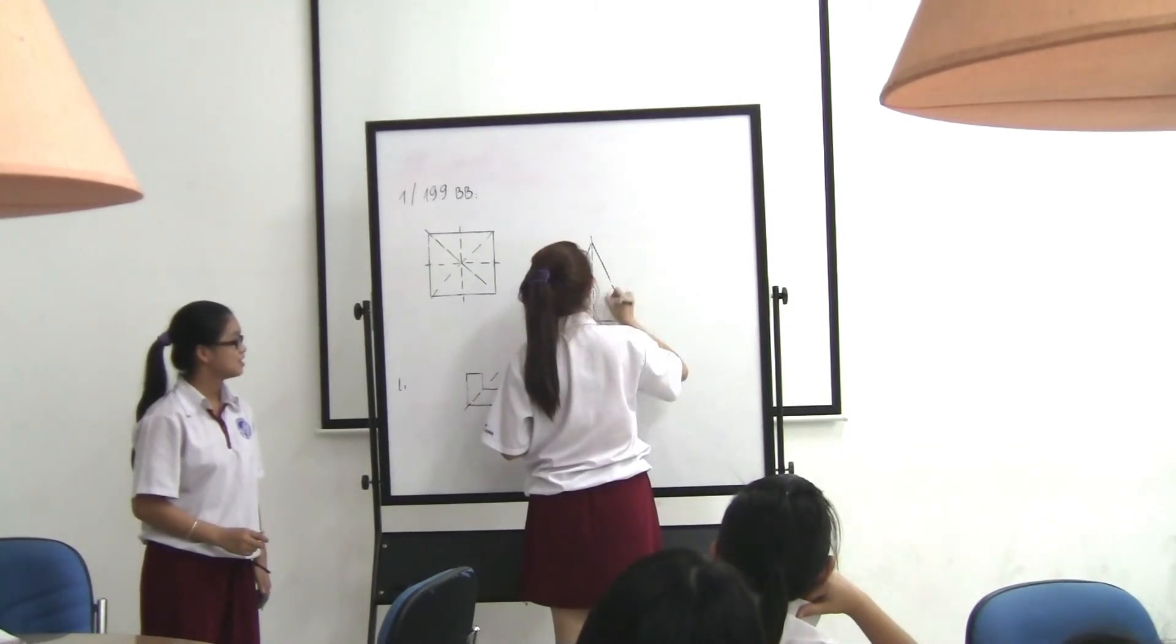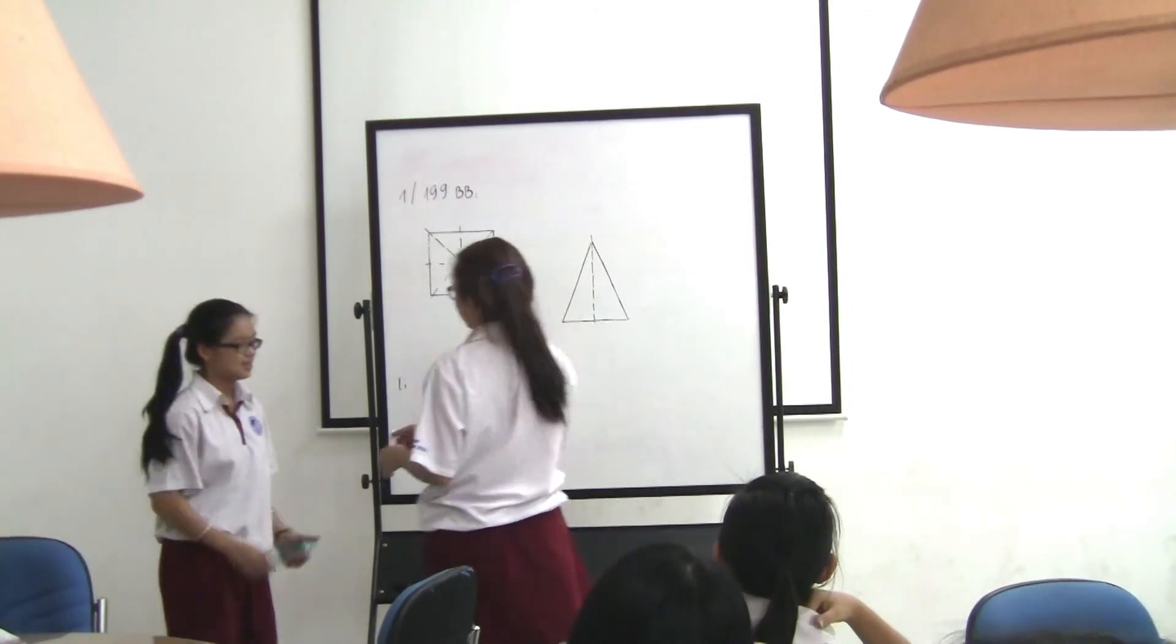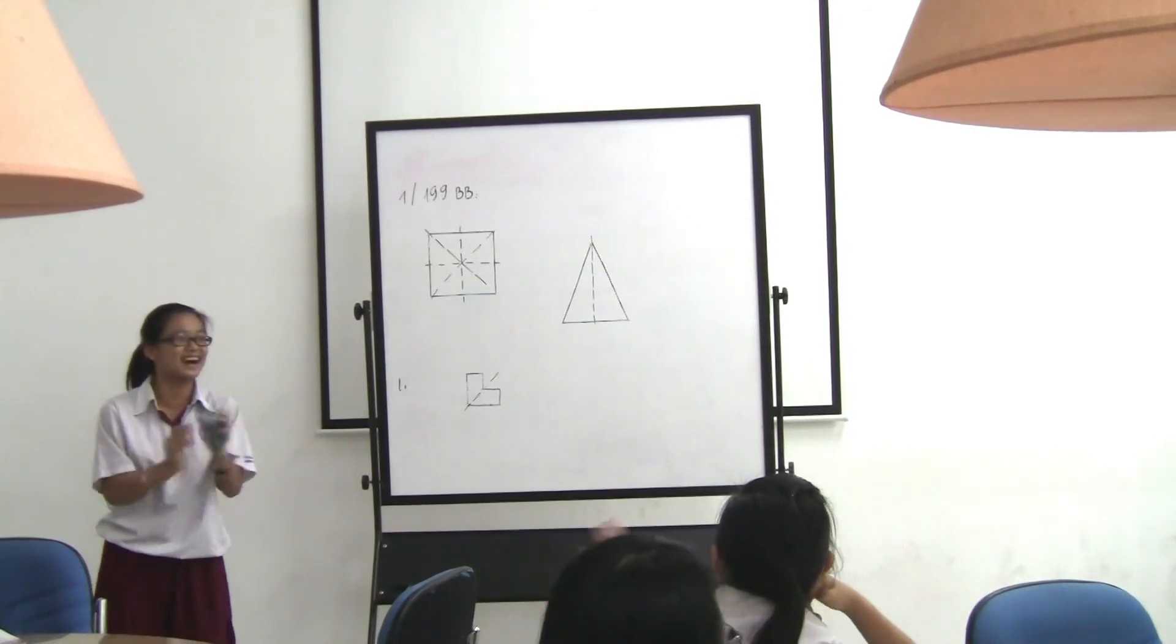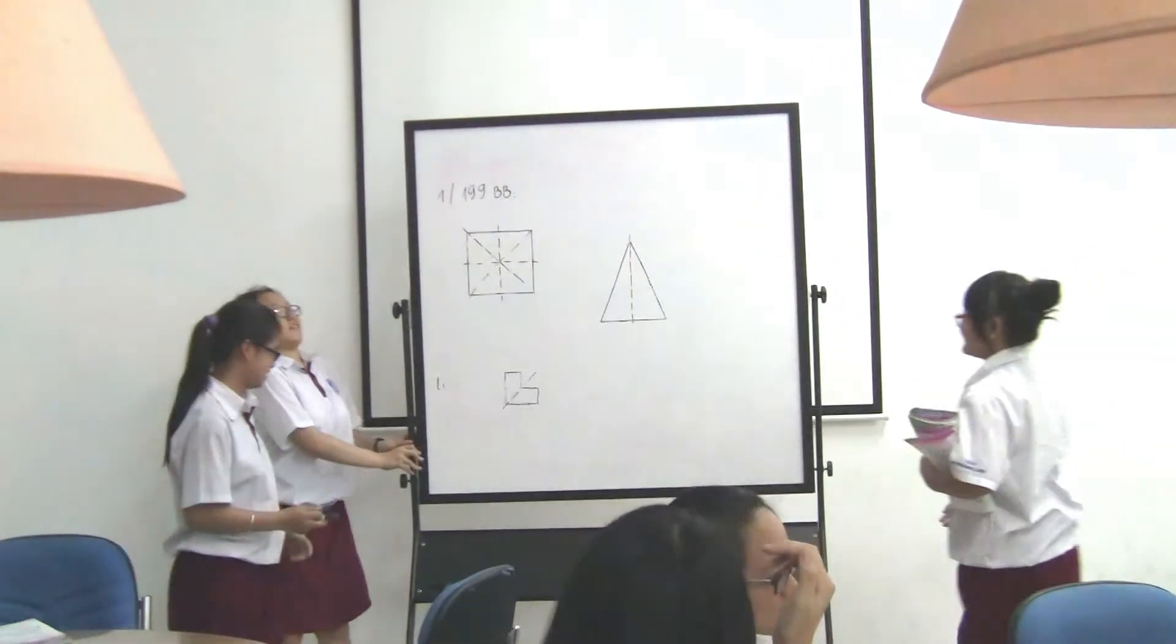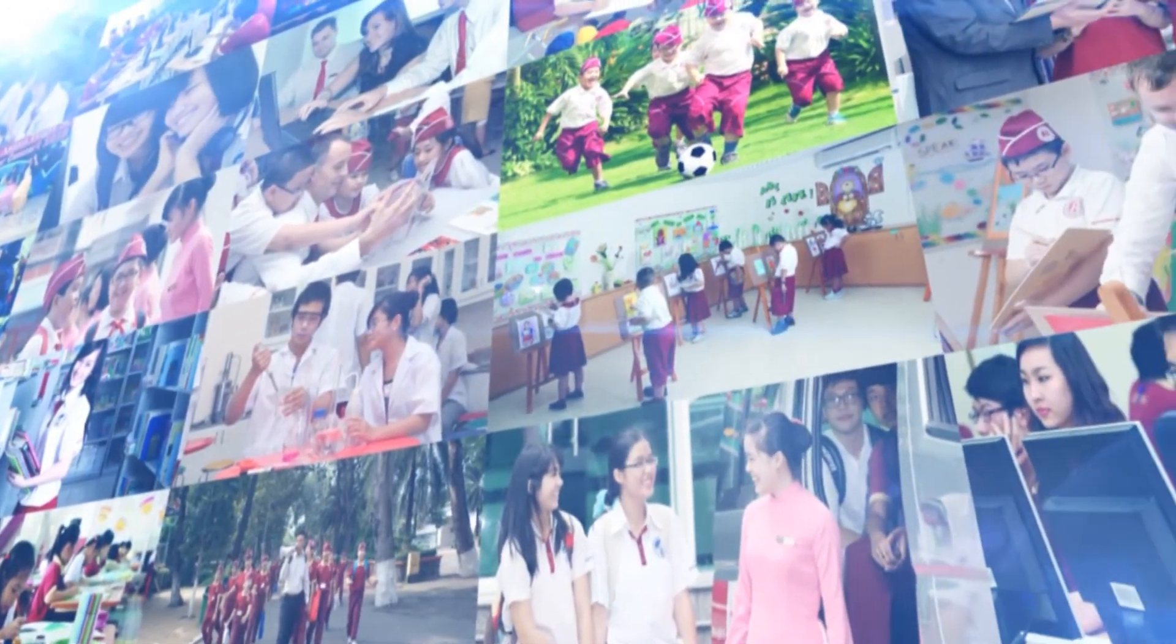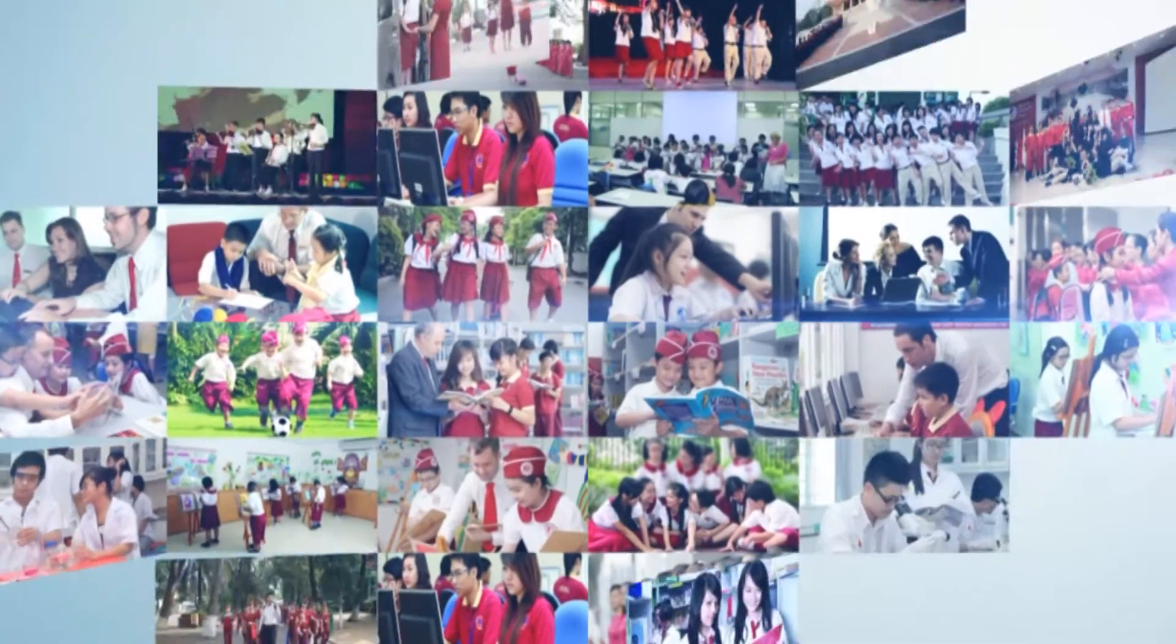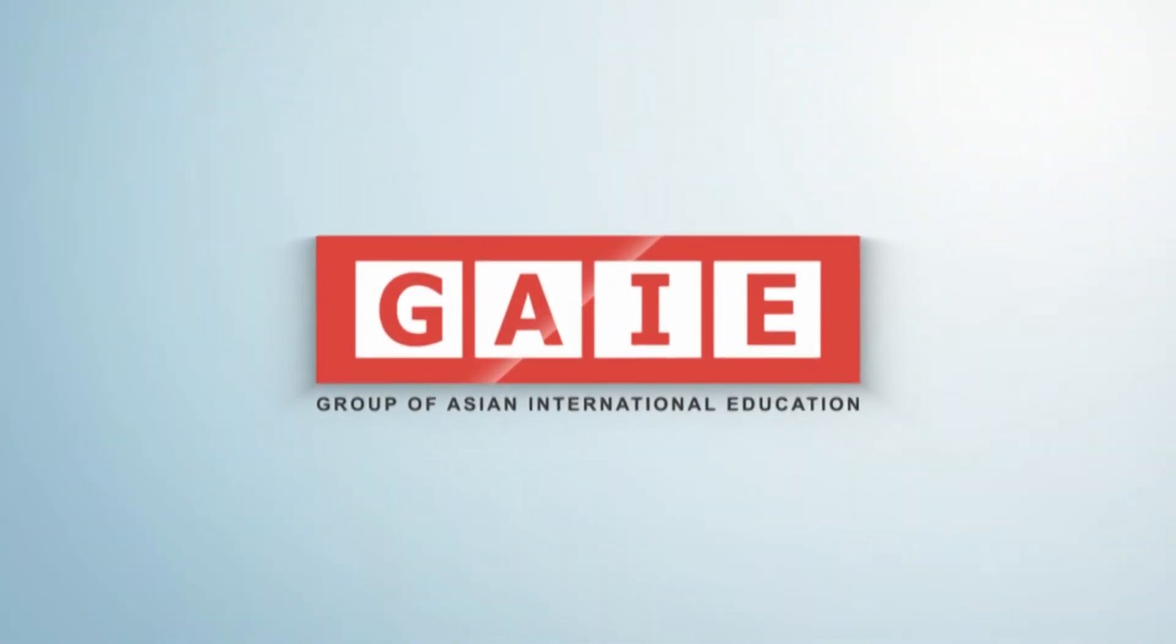So what shape is this? Rhombus. Rhombus, that's right. Okay, that's right.